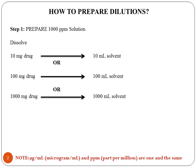This can also be done by dissolving 100 mg of drug in 100 ml of solvent, or 1000 mg of drug in 1000 ml of solvent. If the amount of drug taken and amount of solvent taken have the same numbers — like 10 mg drug and 10 ml solvent — then the final solution prepared is 1000 ppm. Keep in mind that microgram per ml and ppm are one and the same terms; both are used synonymously.